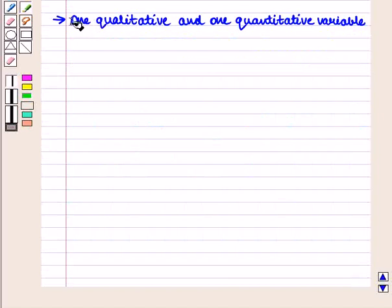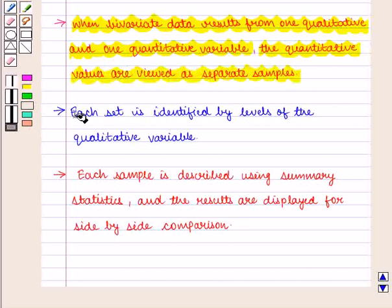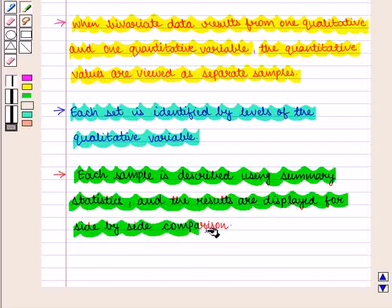Now we are going to discuss the case of one qualitative and one quantitative variable. When bivariate data results from one qualitative and one quantitative variable, the quantitative values are viewed as separate samples. Each set is identified by levels of the qualitative variable. Each sample is described using summary statistics and the results are displayed for side-by-side comparison.